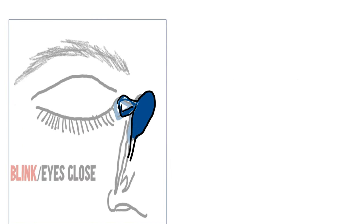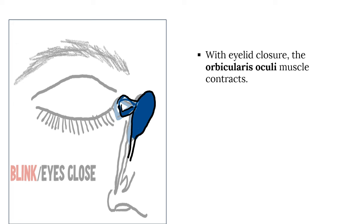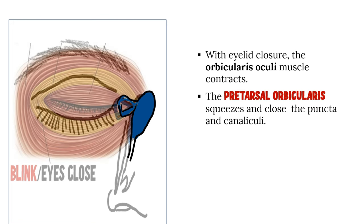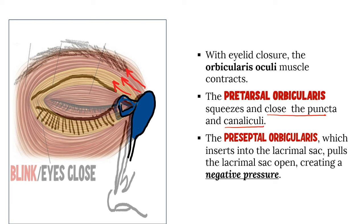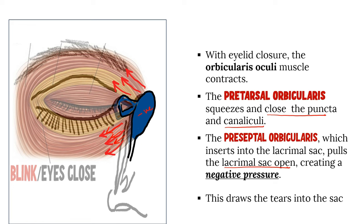During the blink, when we close our eyes, the orbicularis oculi muscle will contract. The pretarsal orbicularis, present in close approximation to the puncta and the canaliculi, will squeeze and close these puncta and canaliculi. At the same time, the preseptal orbicularis, which inserts near the lacrimal crest around the lacrimal sac, will contract and pull the walls of the lacrimal sac laterally. As that happens, the lacrimal sac will open, and because of this opening along with the closing of the puncta, a negative pressure is created inside the lacrimal sac, drawing the tears from the puncta and canaliculi into the sac.